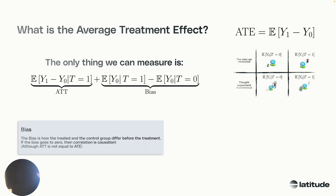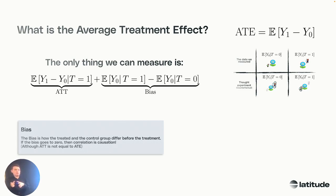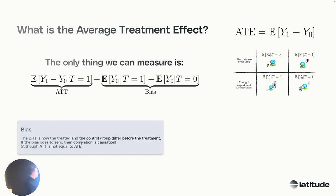As soon as you have this bias term, it's basically saying: how did the treated and the non-treated group differ before they got the treatment? In marketing language: were customers in France already different from customers in Italy before they both got the treatment or not? That is the bias term. And if we can make this go to zero, then we end up with causation in terms of what we're measuring — everything we've measured is now a causal impact.